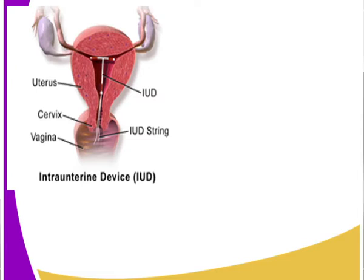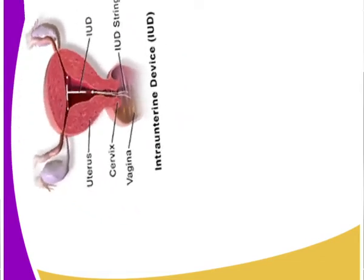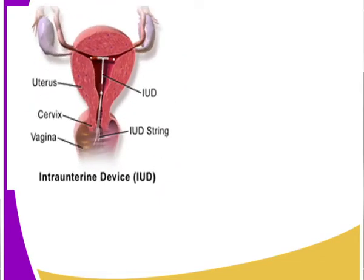You can see the IUD has been inserted through the vagina into the cervix, up to the junction of the fallopian tube on both the left and right sides. It is T-shaped, and you can see that it has blocked the passage. If you have inserted the penis and are releasing sperm, the sperm will be prevented from entering into the fallopian tubes.